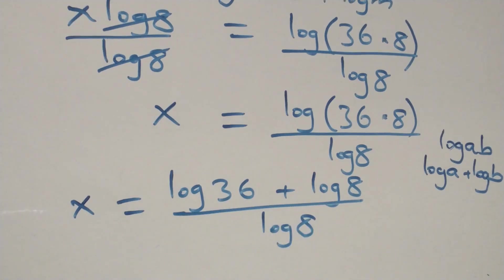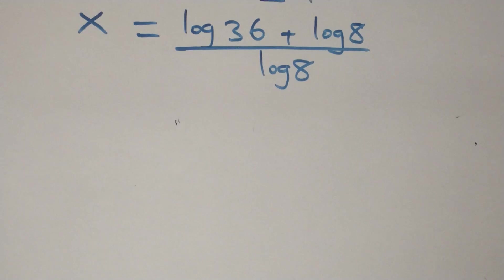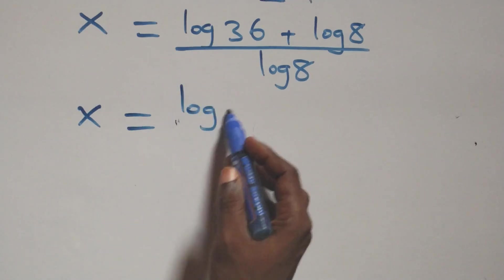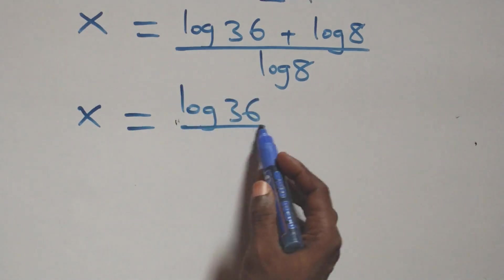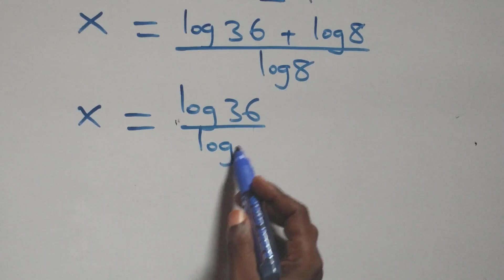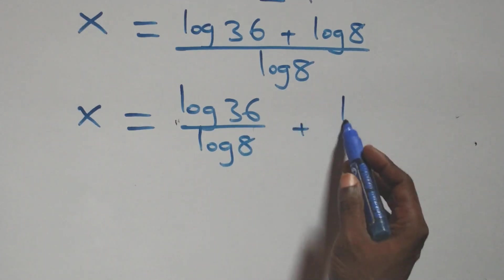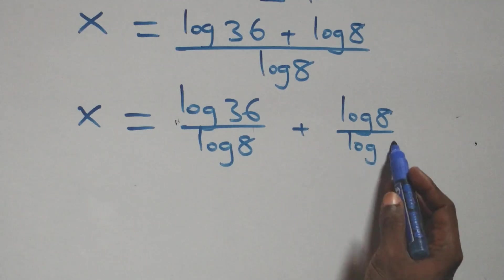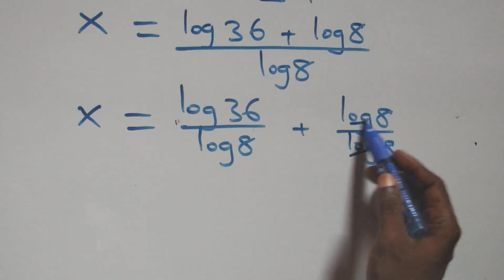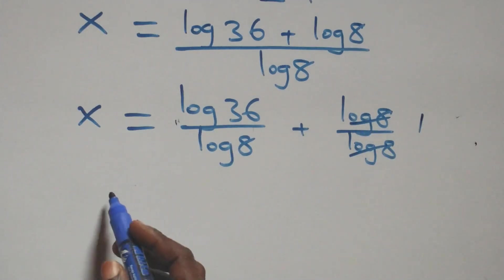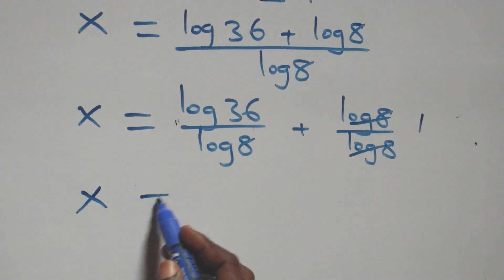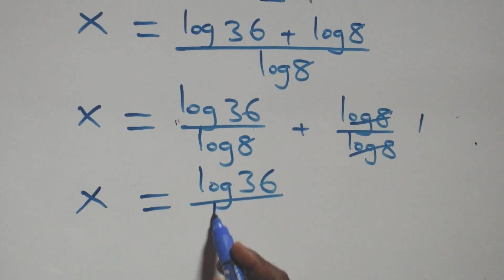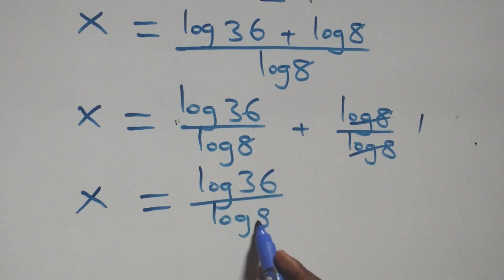We separate this into two fractions: x equals log 36 over log 8 plus log 8 over log 8. Since log 8 over log 8 equals 1, this simplifies to x equals log 36 over log 8 plus 1.